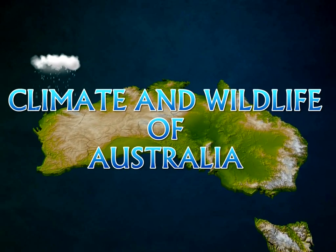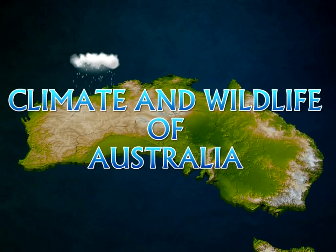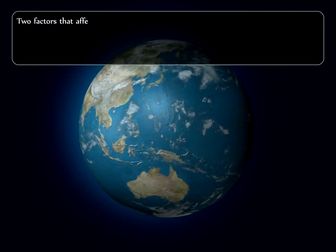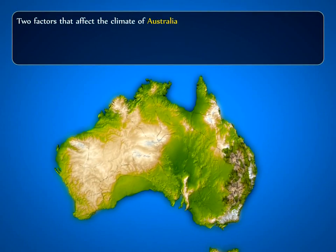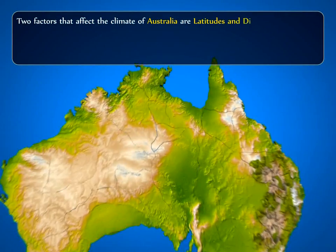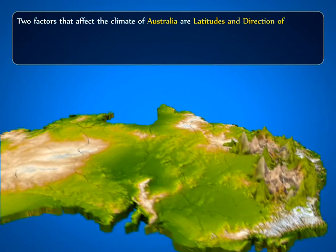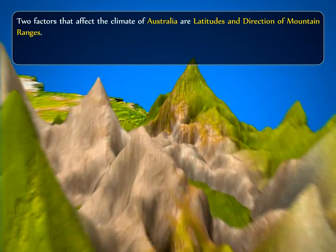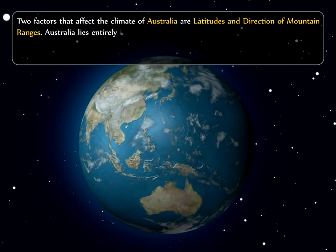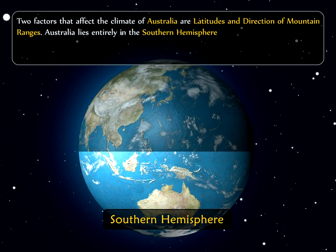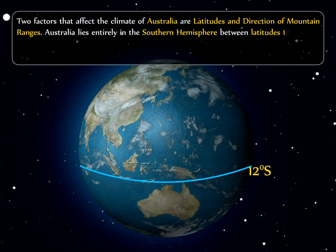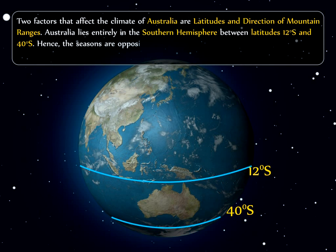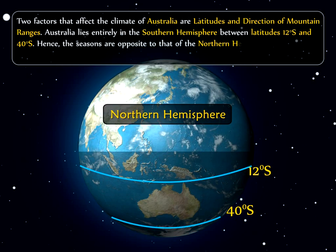Climate and Wildlife of Australia. Two factors that affect the climate of Australia are latitudes and the direction of the mountain ranges. Australia lies entirely in the southern hemisphere between latitudes 12 degrees south and 40 degrees south. Hence, the seasons are opposite to that of the northern hemisphere.